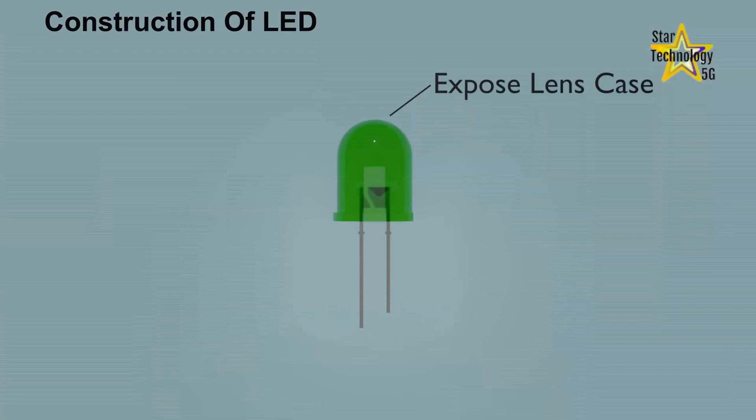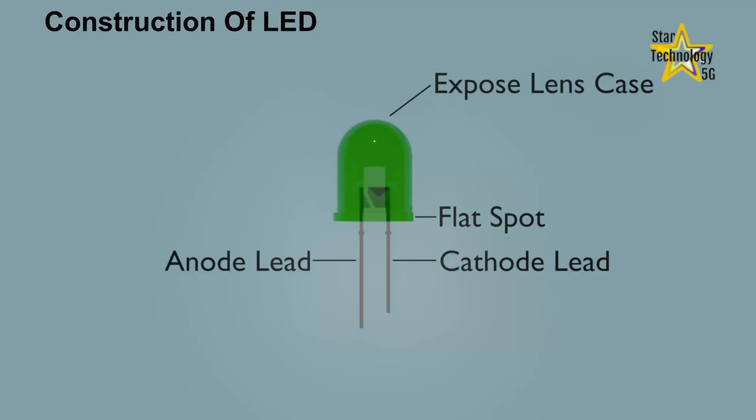Construction of LED. The outer casing is called an exposed lens case. This flat part indicates the cathode side. This lead is called a cathode lead, and the other is called an anode lead. The longer leg is the anode while the shorter leg is the cathode.